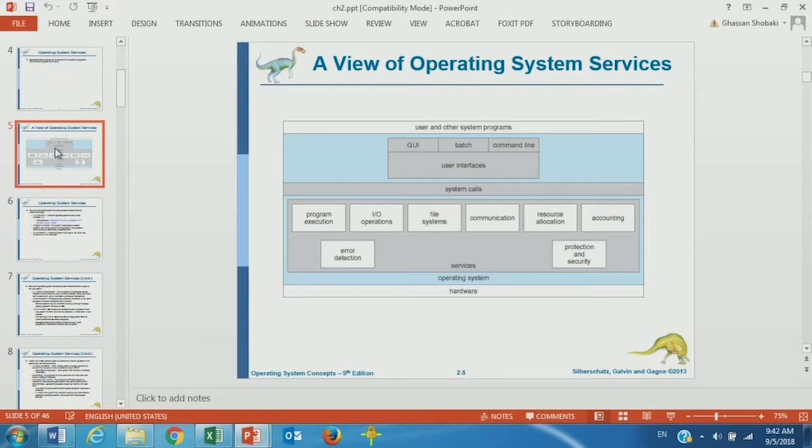These are the services that the operating system does. It does program execution, I/O, file systems, process communication, resource allocation, accounting, keeping track of resource usage. We will talk in greater detail about these later. But many of them will be covered in great detail in the corresponding chapters, error detection and protection and security.